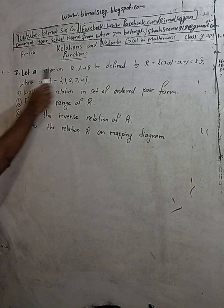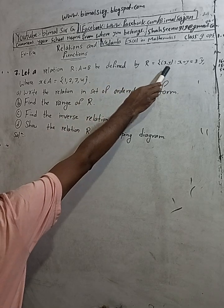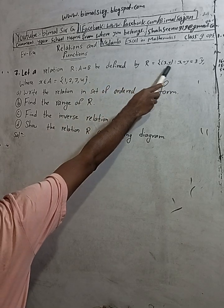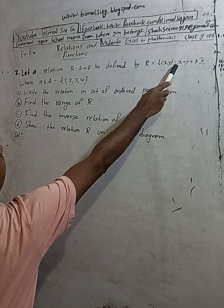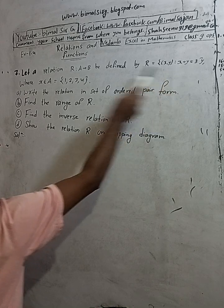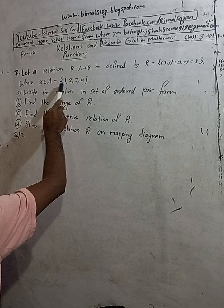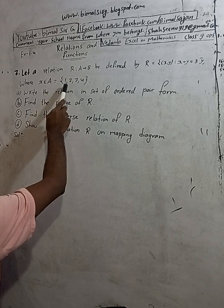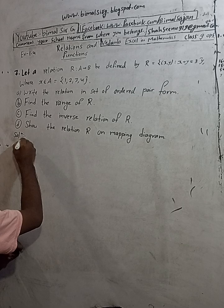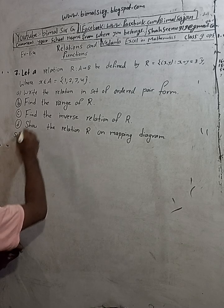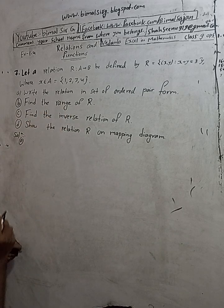Let relation R from A to B be defined by R equals the set of (x, y) such that x plus y is equal to 8, where x belongs to A equals {1, 2, 3, 4}. Write the relation in set of ordered pair form.